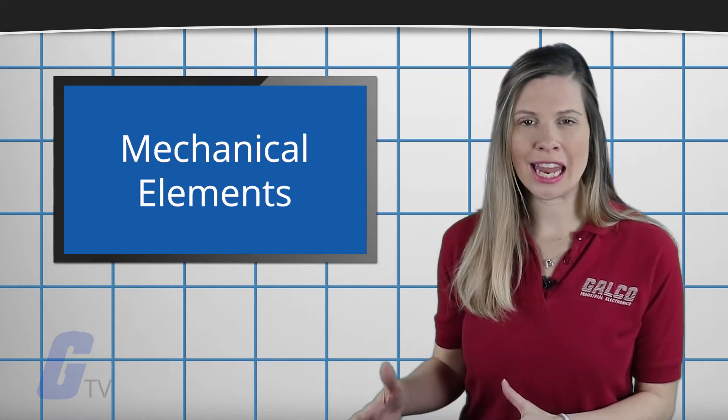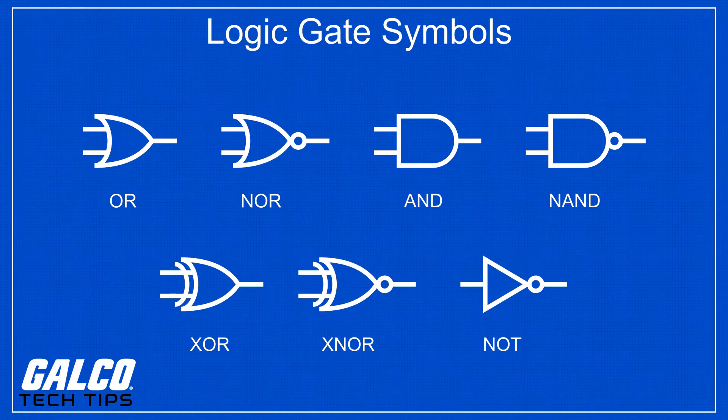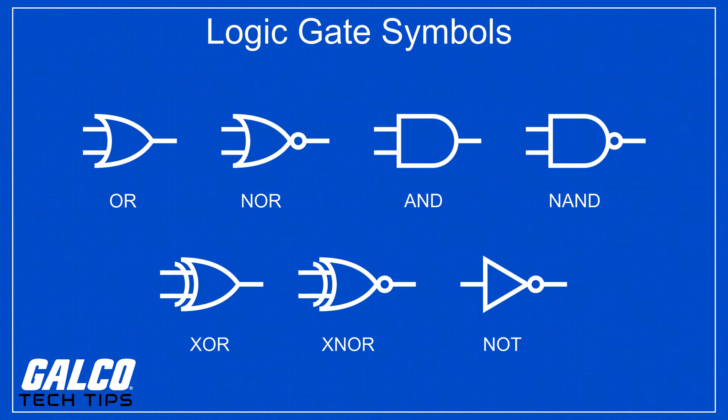There are seven basic logic gates: AND, OR, XOR, NOT, NAND, NOR, and XNOR.